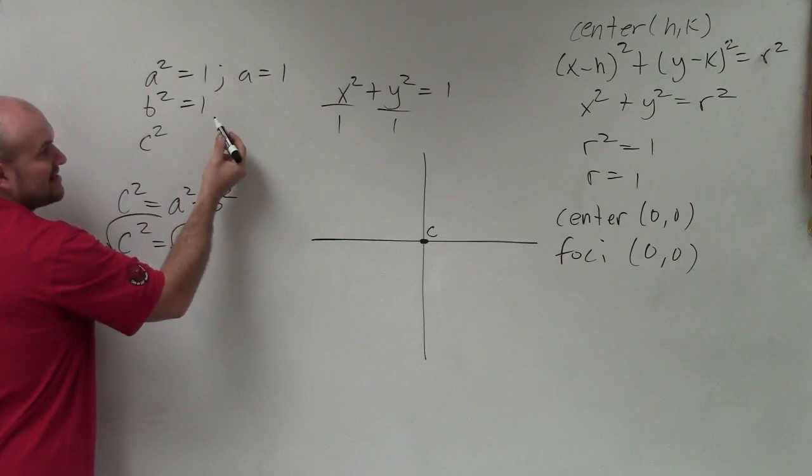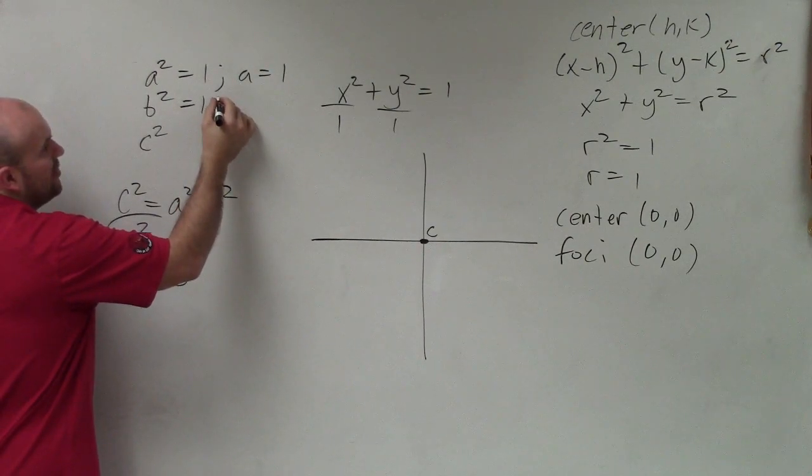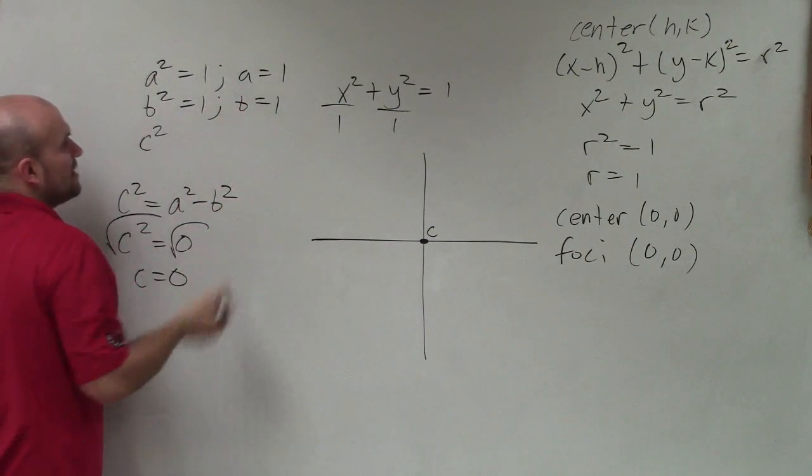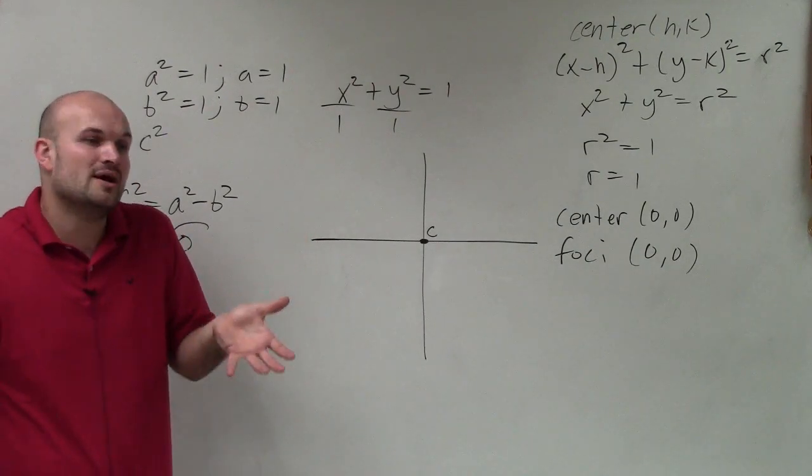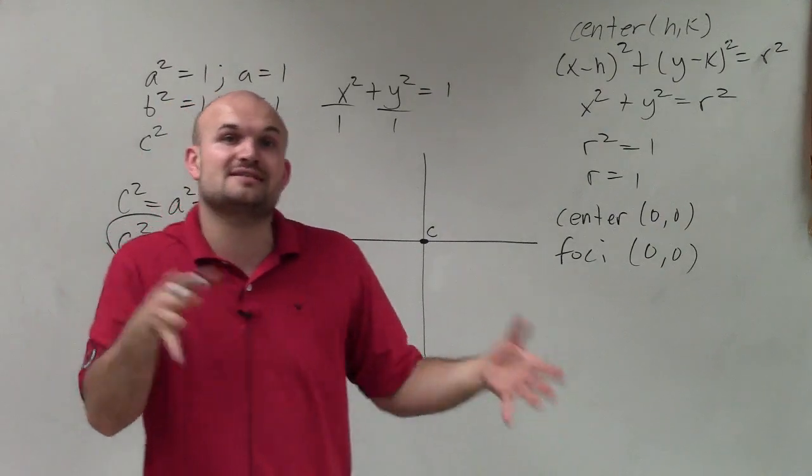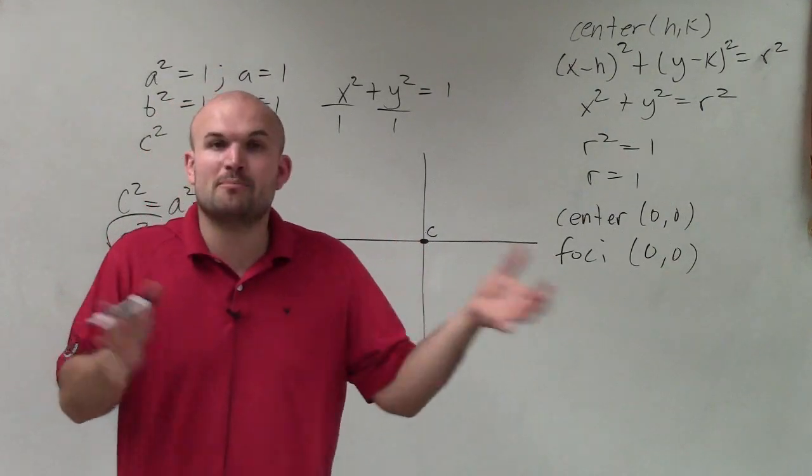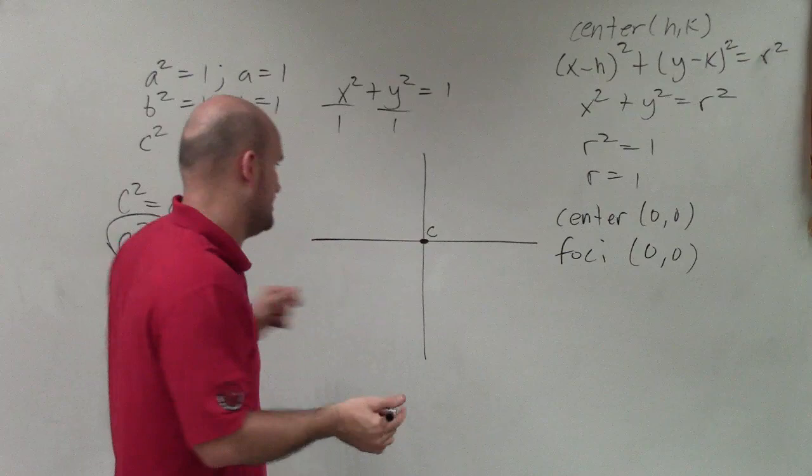But as you notice, my major axis and my minor axis are both the same. So it doesn't matter which I'm going to add, or which one's going to be major, which one's going to be minor, because there is no distinction now between my vertices and my co-vertices, because there is no major axis and minor axis. They're equal to one another.